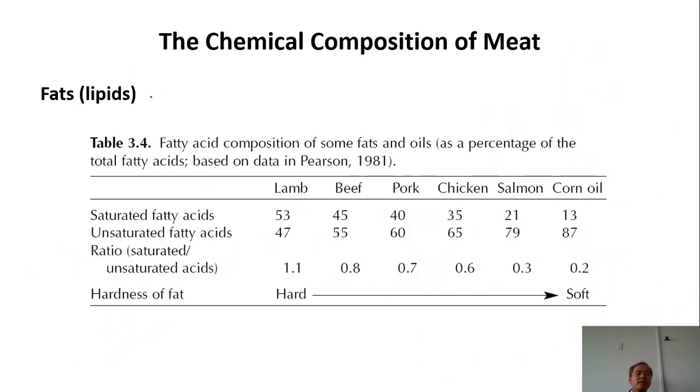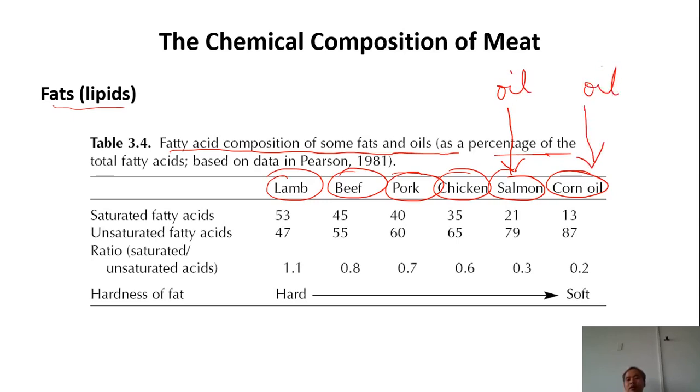This table is nice because it reveals what we have been just talking. Fatty acid composition of fats and oils of some material, of some products. If you have lamb, beef, pork, chicken, salmon, corn oil. Corn oil means the lipids from plants. And the other from animals. The lipids from salmon, you call it fat or oil? Oil. Still oil. This one, oil. But here, you already call them fats, because they're quite solid.